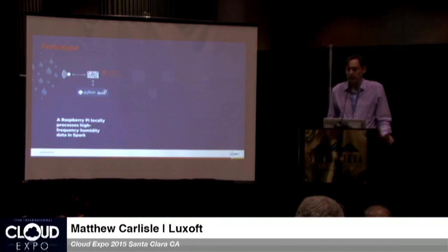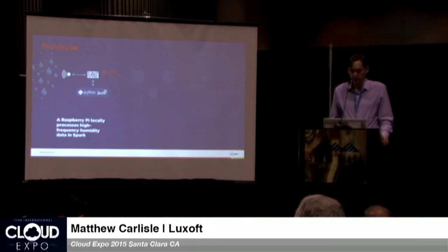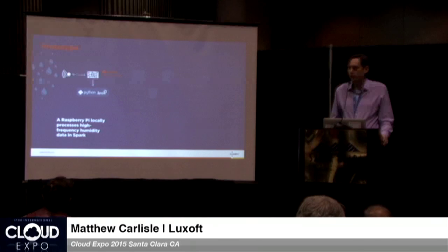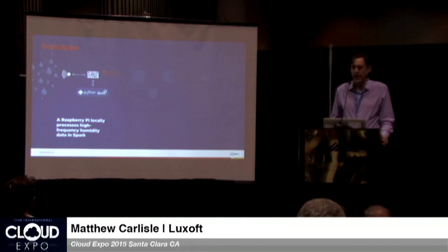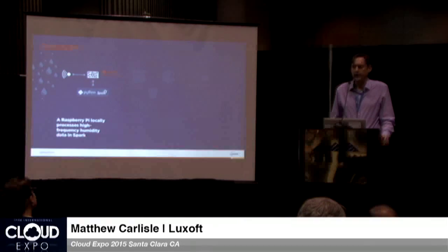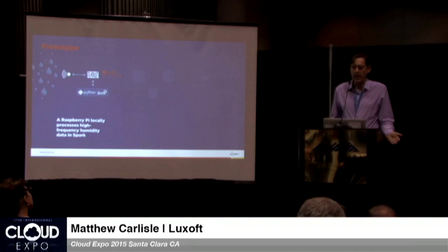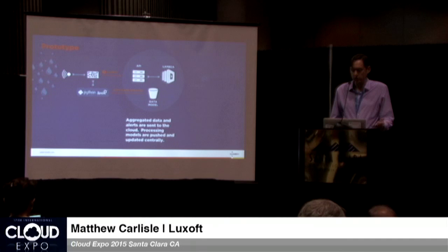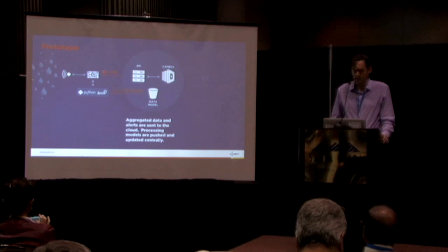So how might this particular prototype work in that kind of solution? In this example, you have a Raspberry Pi that's locally processing the high-frequency data and then acting on it locally — doing aggregates, applying a model to that data on the actual Raspberry Pi. Then once the model says that something has happened — the humidity is fluctuating — it can either act locally, or it could just send the alert up to the cloud rather than sending all the data and making the cloud do the alert.